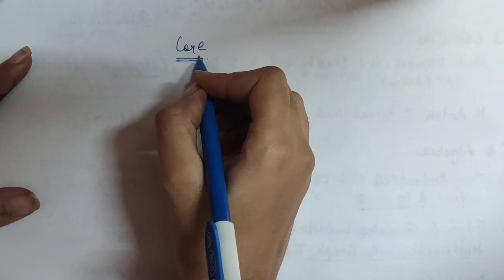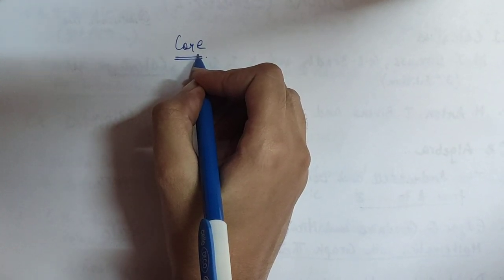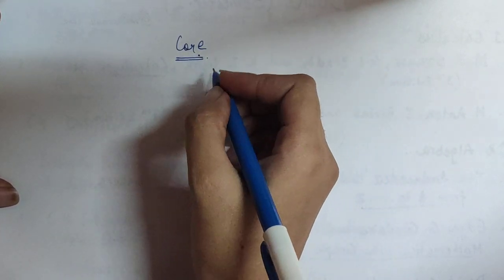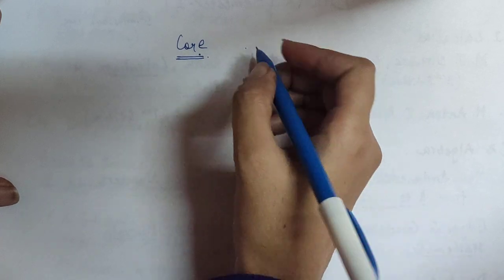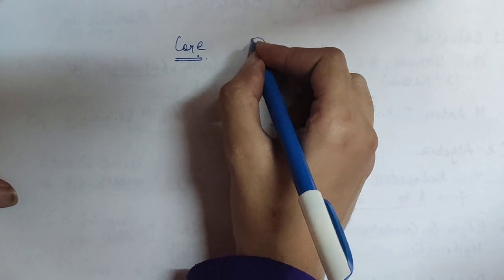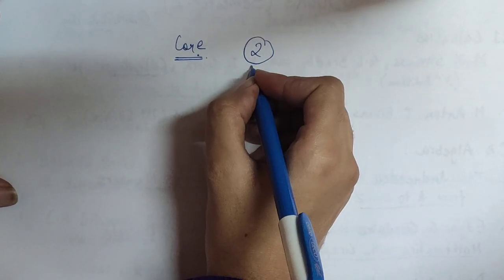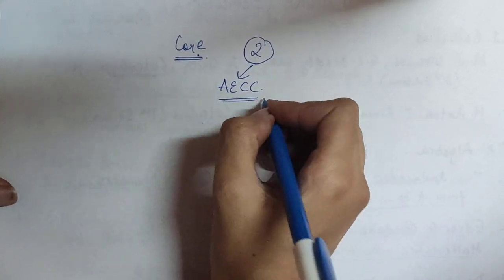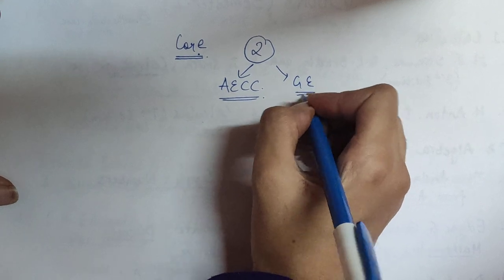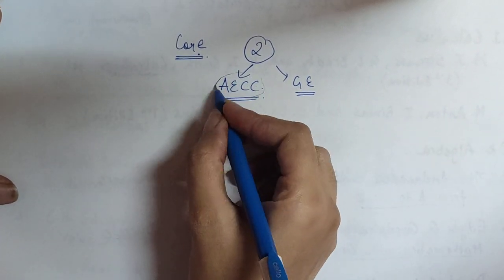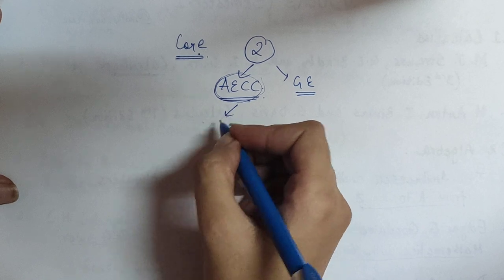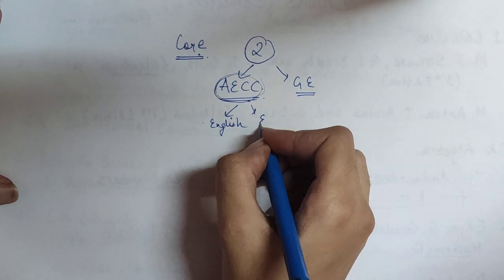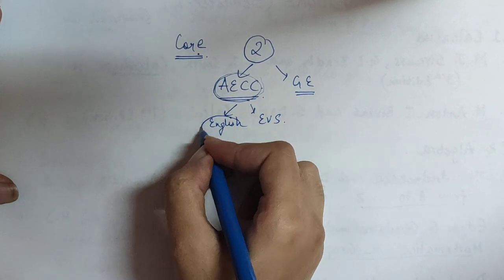For the syllabus you can refer to our video whose link would be given in the description box. Now apart from core, we have two different subjects in first and second semester. First is our AECC, and second is our GE. Now as far as this AECC is concerned, it can be English or it can be EVS. So if you are getting English in first semester, then you will get EVS in second semester, and if you are getting EVS in first semester, then you would get English in second semester.